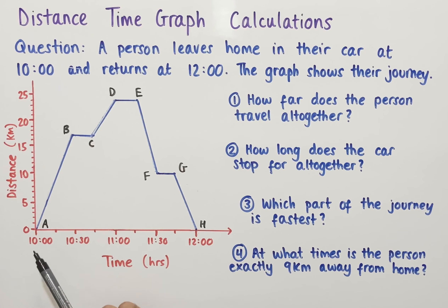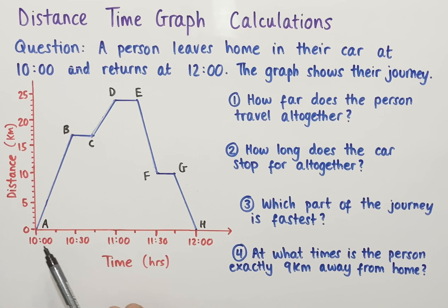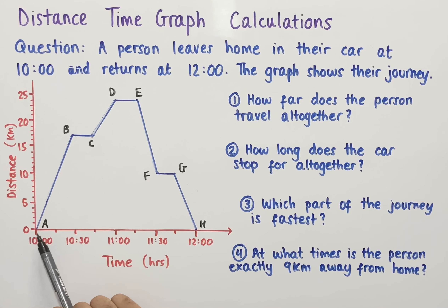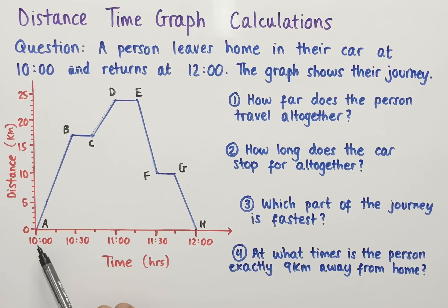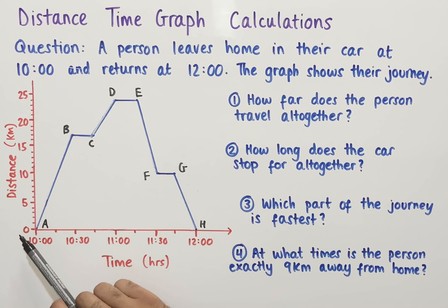On the x-axis the intervals are increasing by 30 minutes, and there are also sub-intervals in between where we have the 15-minute markers. So 10:15 is here, 10:45 is here, and so on. On the y-axis we have intervals of 1.